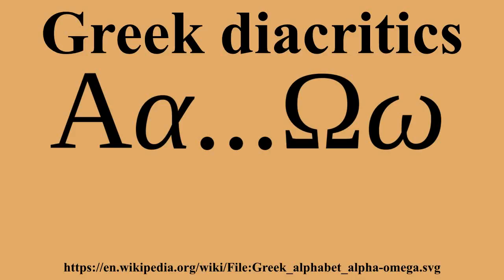In ancient Greek, the dieresis appears on the letters iota and upsilon to show that a pair of vowel letters is pronounced separately rather than as a diphthong. In modern Greek, the dieresis usually indicates that two successive vowels are pronounced separately, but occasionally marks vowels pronounced together as an unstressed diphthong rather than as a digraph. The distinction between two separate vowels and a diphthong is not always clear. The dieresis can be combined with the acute, grave, and circumflex, but never with breathings, since the letter with the dieresis cannot be the first vowel of the word.